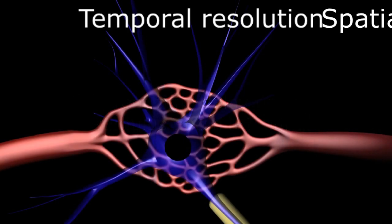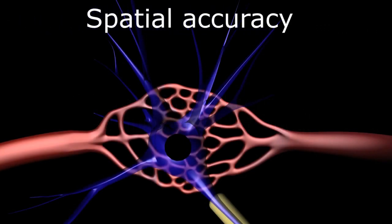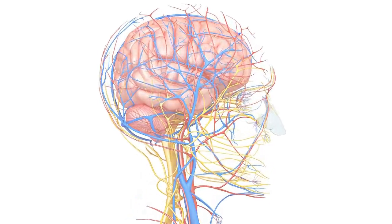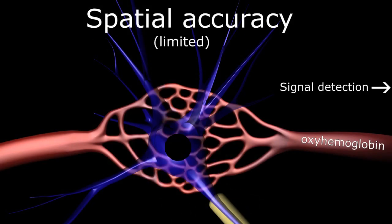Again, since we are indirectly detecting neuronal activity based on the regional increase in the downstream levels of oxyhemoglobin over baseline, depending on the orientation of the venous drainage, signal localization may actually be detected a few millimeters away from the actual neuronal activity.